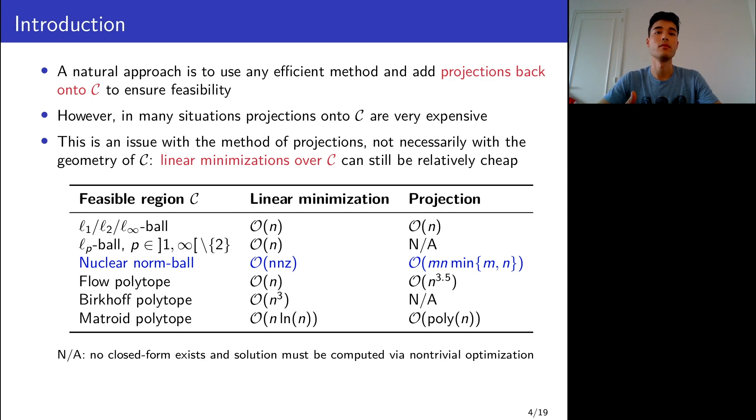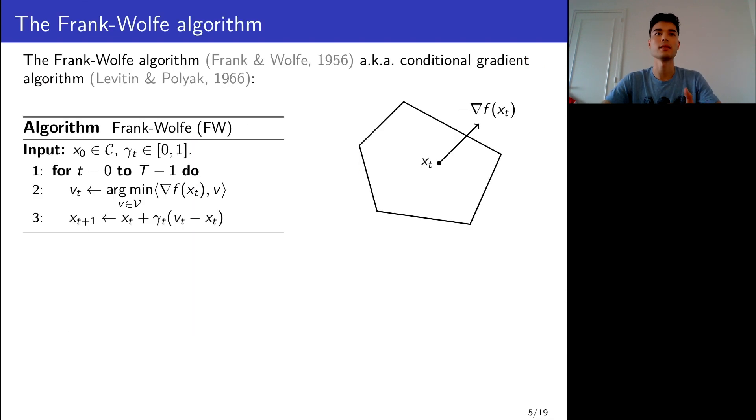In many applications of interest, the number of non-zero entries is much smaller than m times n. There are also some other very interesting examples. So the question is, can we find a gradient-based method that avoids projections? And the answer is yes, and it's the Frank-Wolfe algorithm, also known as the conditional gradient algorithm.